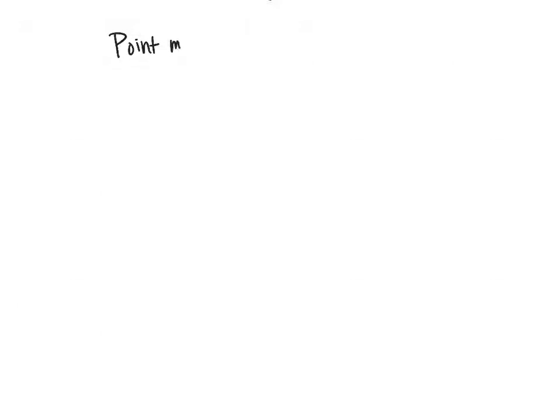The first type of mutations we're going to talk about are point mutations. As the name implies, a point mutation affects a single base — one single A, T, C, or G. One single base is going to be affected by this particular mutation. There are different types of point mutations.